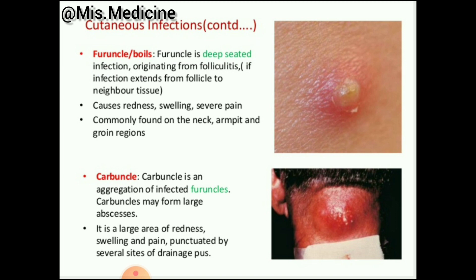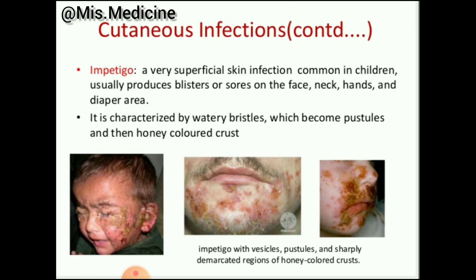Furuncles, or boils, are deep-seated infections originating from folliculitis. When the infection extends to the neck and groin region it causes redness, swelling, and severe pain — commonly found on the neck, armpit, and groin. Carbuncles are an aggregation of infected furuncles. Carbuncles may form large abscesses — large areas of redness, swelling, and pain punctuated by several sites of drainage of pus.